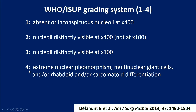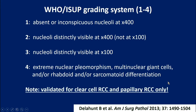Grade 4 represents extreme nuclear pleomorphism, multinuclear giant cells, as well as rhabdoid and sarcomatoid differentiation, which was not previously included. It is important to note that this grading system has been validated for clear cell and papillary renal cancer only, and should not be applied to other types, such as chromophobe renal cell carcinoma.